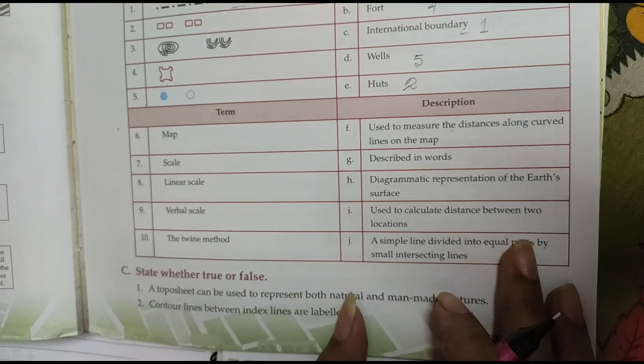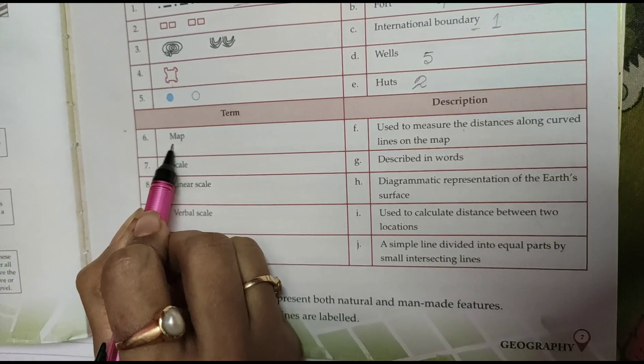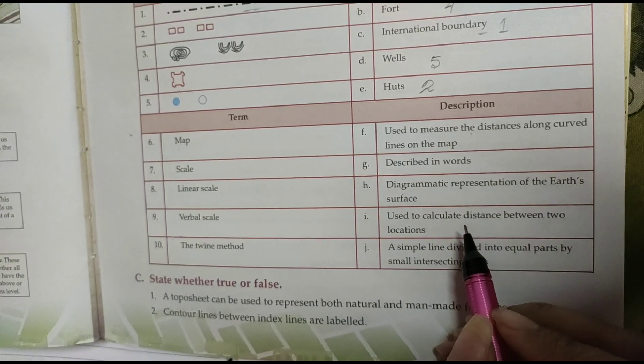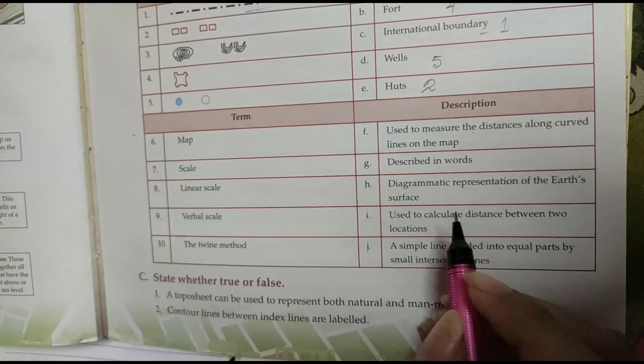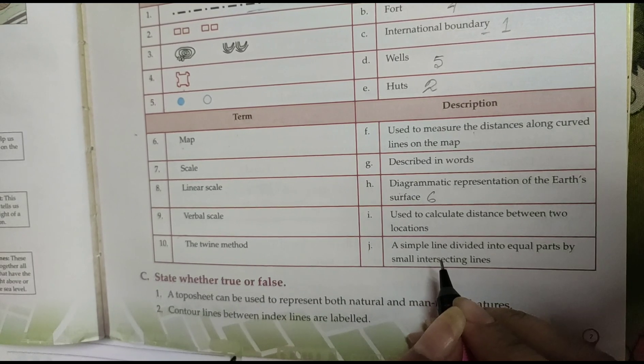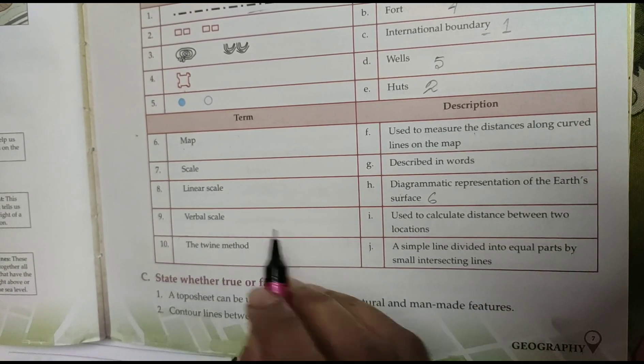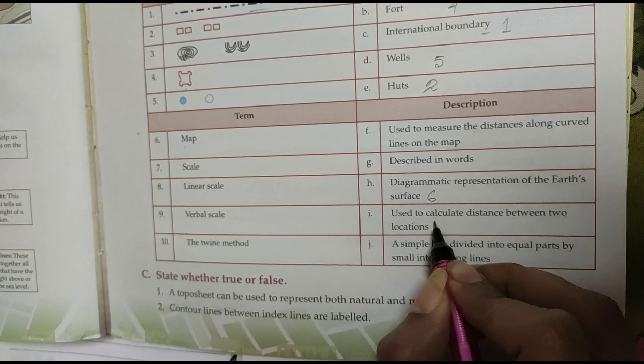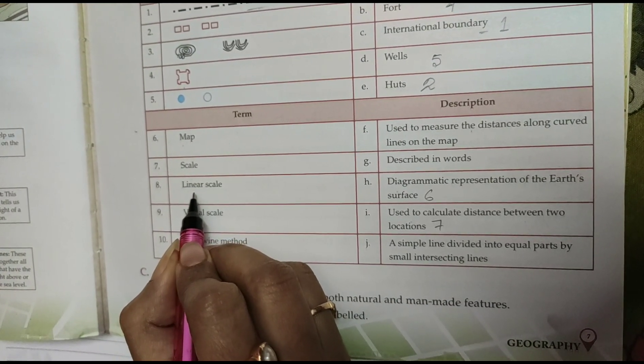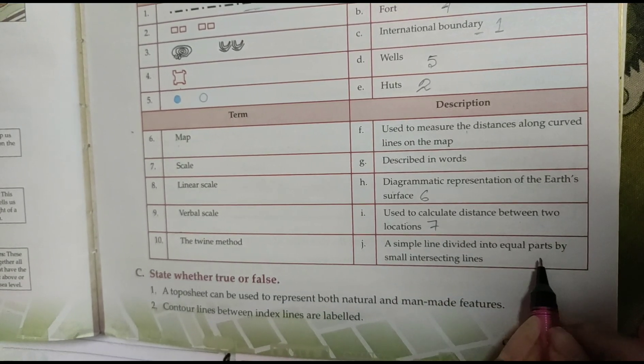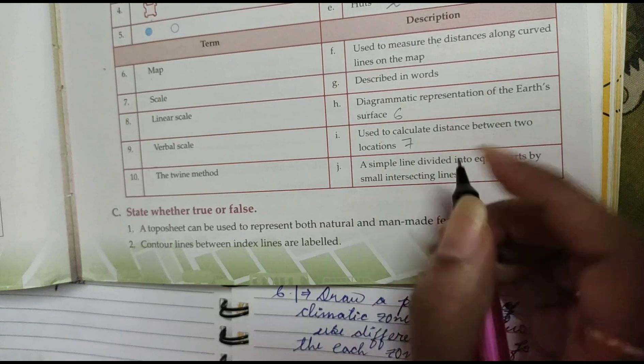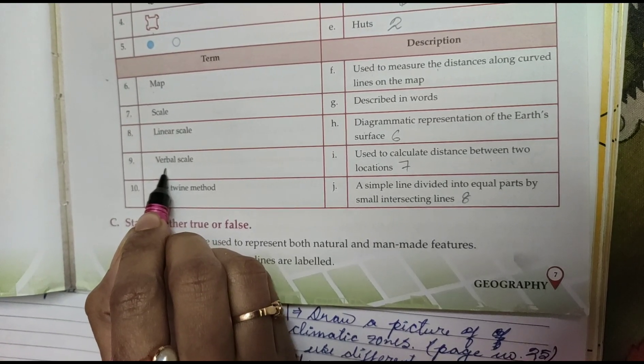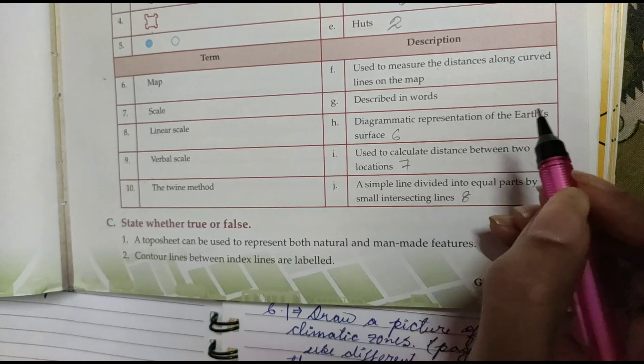Next is the terms and descriptions. Map. Sixth number is diagrammatic representation of the earth's surface. Next is scale used to calculate distance between two locations. Linear scale is a straight line divided into equal parts with small intersecting lines, that is the 8th number. Ninth number is the verbal scale, described in words.